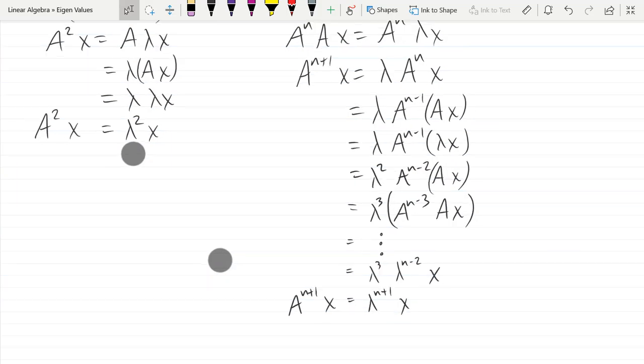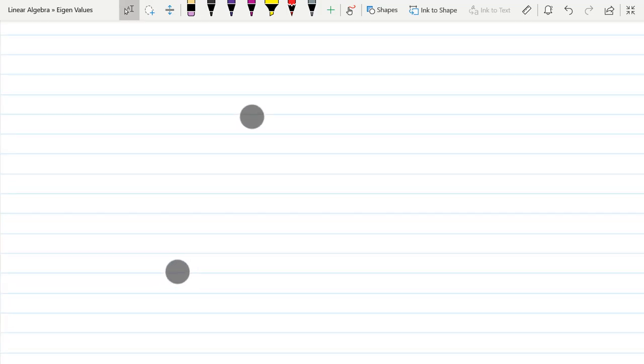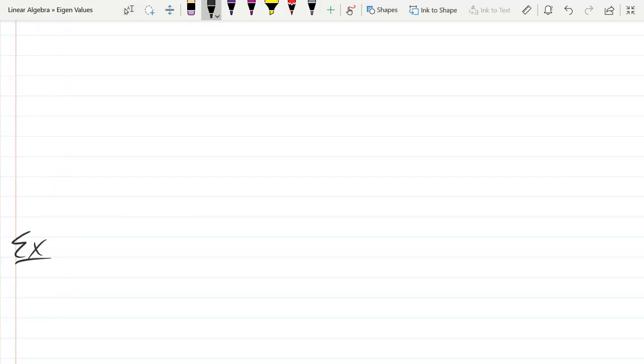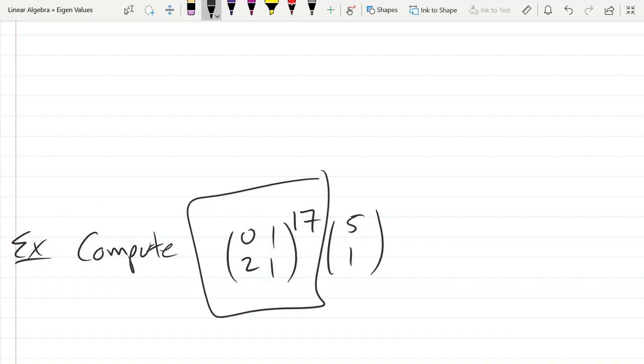So we're going to use that theorem and quickly compute something that would take a long time. This just says compute. How long would it take if I asked you to just compute what's in that box right there? Take a little while, right? Squaring it, that's not so bad, thirty seconds or so. But squaring it and then taking it to higher powers, maybe a few minutes. If I did 175, that would take a very long time. So we're going to use that theorem above.